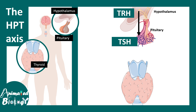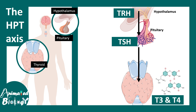The thyroid stimulating hormone acts on the thyroid gland and leads to the release of T3 and T4. The T3 and T4 levels can rise in the blood. When they go beyond a certain level, it leads to a negative feedback into the pituitary and at the level of the hypothalamus. This is the entire axis.